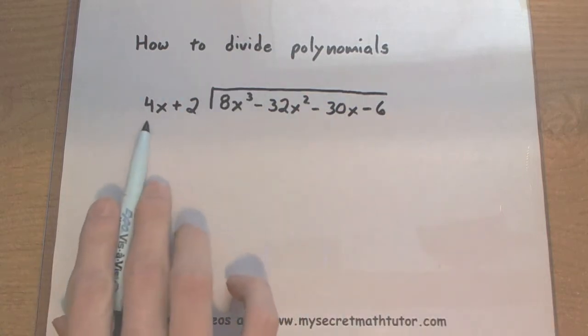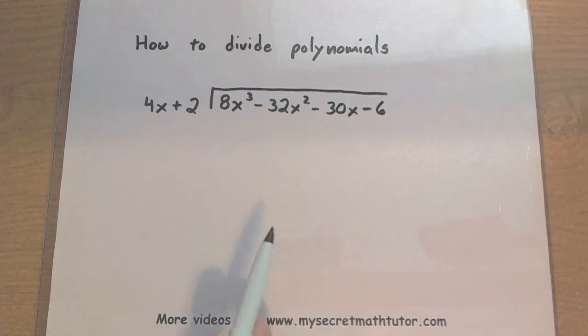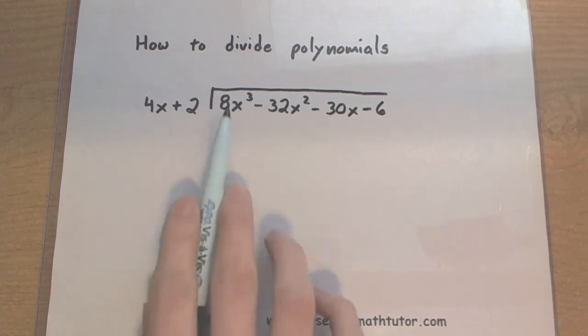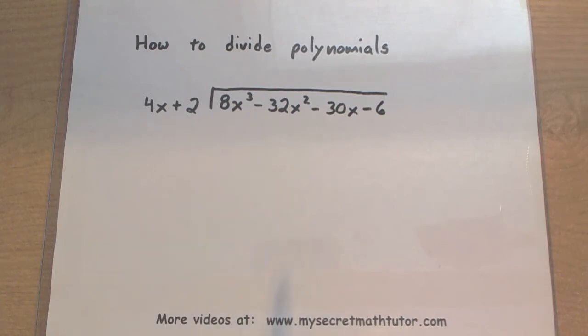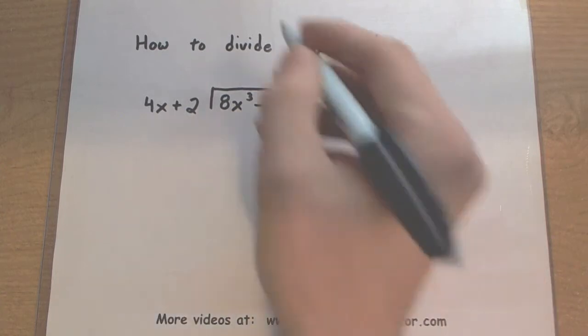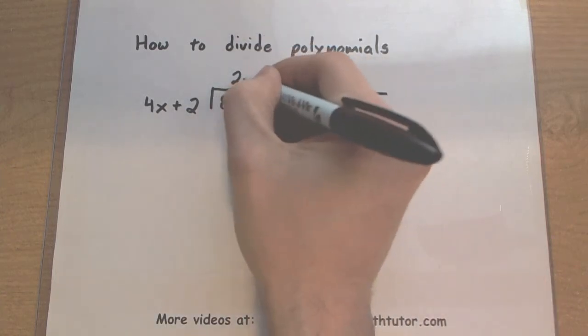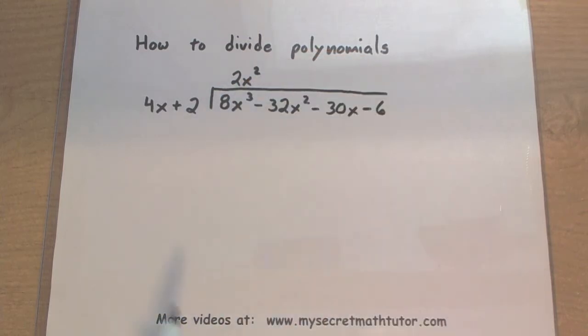The first thing we do is we observe the 4x and the 8x cubed. And we think to ourselves, 4x multiplied by what will give us an 8x cubed? So the only thing that will do this will be a 2x squared. Let's double check this. 4x times 2x squared. Sure enough, 8x cubed. Now that you have your new number up top here,